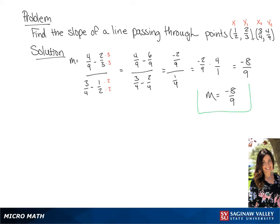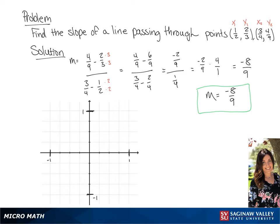Now we are going to graph this using the points. We're going to graph 1 half, 2 thirds, and now 3 fourths and 4 ninths.